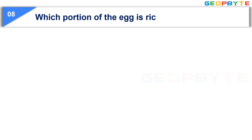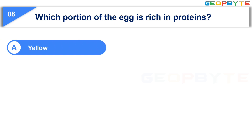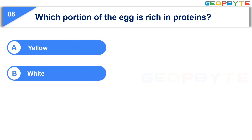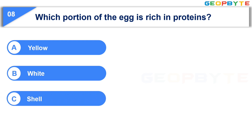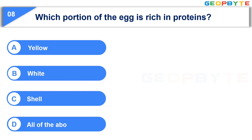Which portion of the egg is rich in proteins? Option A: yellow. Option B: white. Option C: shell. Option D: all of the above. Your time starts now.